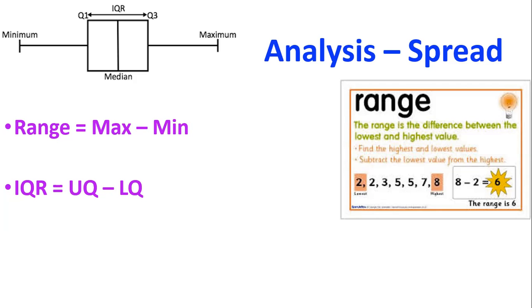The other measure of spread that we have is our interquartile range, and I shorten this to IQR. It stands for interquartile range, and we've got an upper UQ, which is the upper quartile, and the LQ, which is the lower quartile.